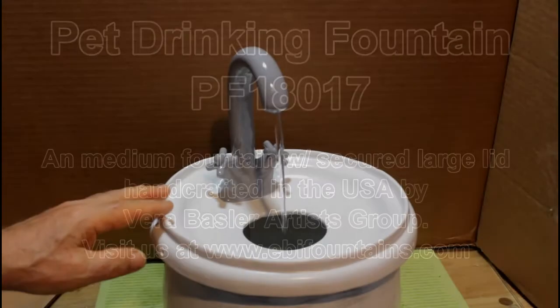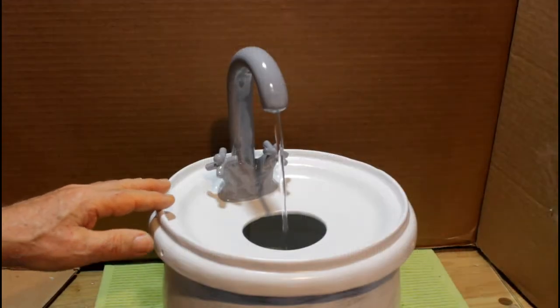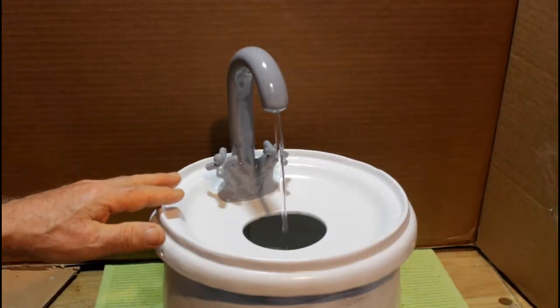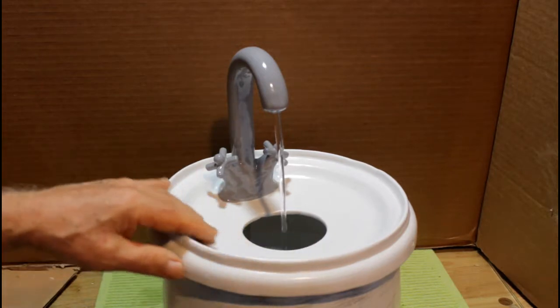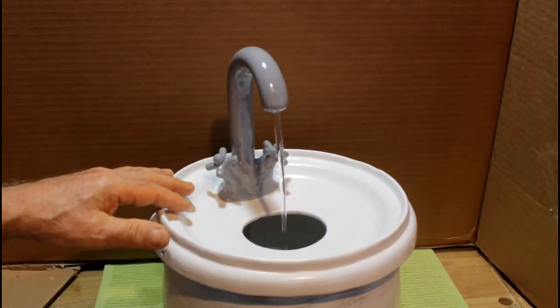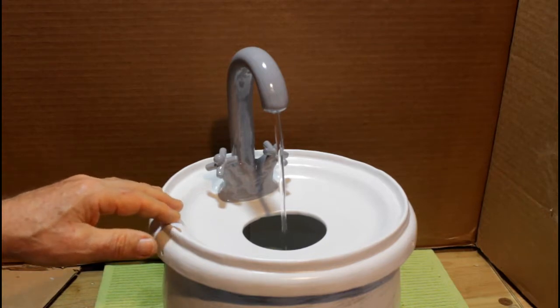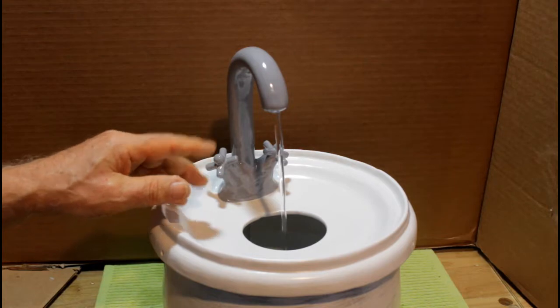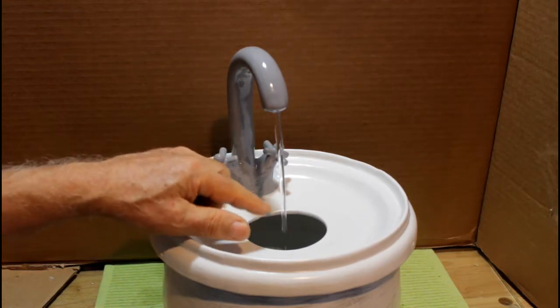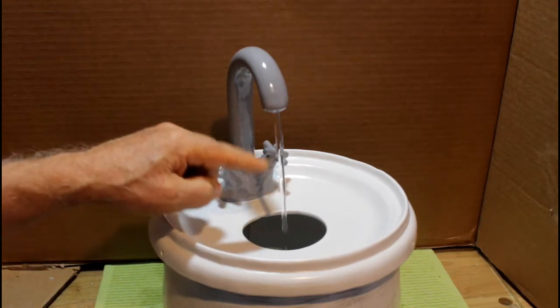Here we have a fountain where the water falls directly back into the bowl. It doesn't collect in the lid as it is in our other fountains, and the cat can drink from the falling water stream in here.